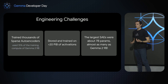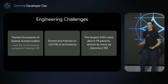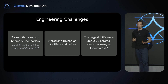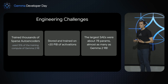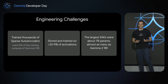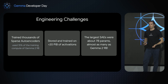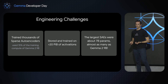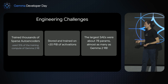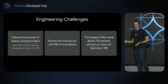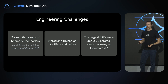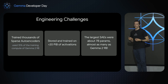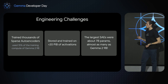GemmaScope was a pretty big engineering effort for an interpretability tool. We trained thousands of sparse autoencoders in total, some of which were almost as big as Gemma 2 9B itself, requiring 15% of the pre-training compute for Gemma 2 9B. We also had to train on over 20 petabytes of activations — that's 20 million gigabytes. We hope that by dealing with this upfront cost, we can unblock you and enable lots of cool projects by the open-source community.